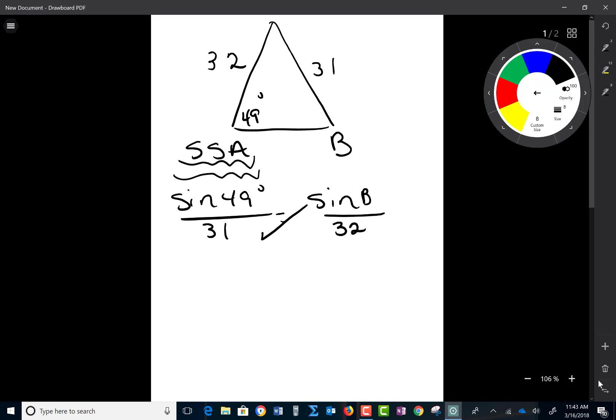And when I cross multiply, I get sine of 49 times 32 equals sine of B times 31. If I divide both sides by 31, I get sine of B is equal to what I have on the left hand side. And if I hit inverse sine of this expression, I get B is approximately 51.174.